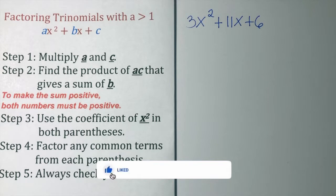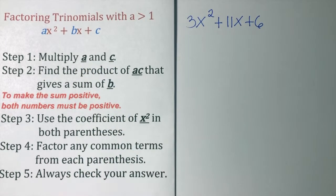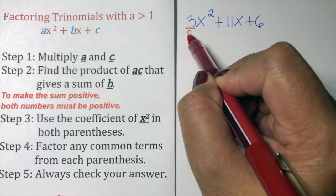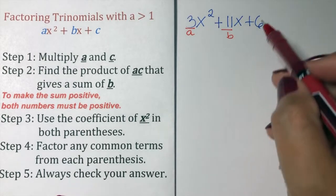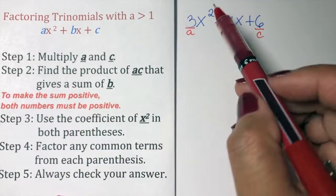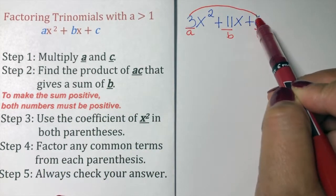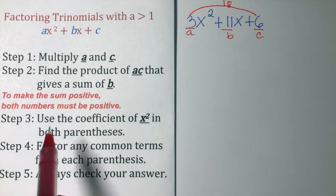In this video, we will factor quadratic trinomials with A greater than 1 following 5 easy steps. For step number 1, we need to multiply A and C. First, let us identify A — that is the coefficient of x squared — and B — that is the coefficient of x — and C, the constant, which is positive 6. Multiply A and C: 3 times 6 is equal to positive 18.